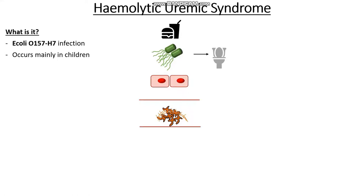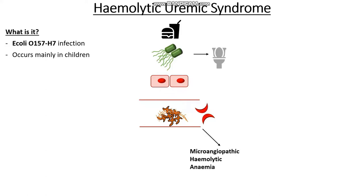Now you can see how we've set up a very similar situation to last time, where passing red cells get split in half, and thus we have the hemolytic component. These clots can then get deposited in the small blood vessels, leading to a microangiopathic hemolytic anemia. And this tends to affect the kidneys much more often than causing neurological symptoms in children.